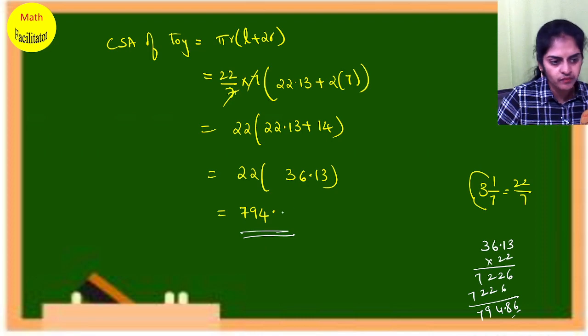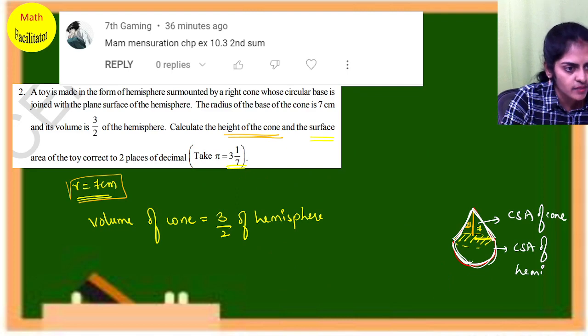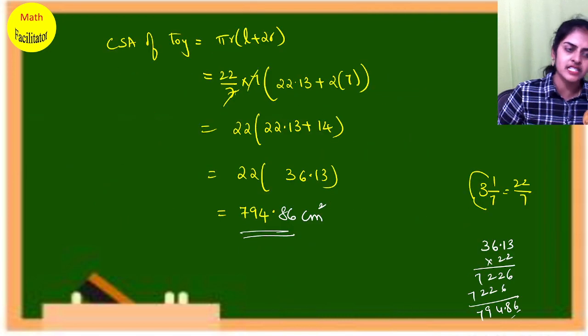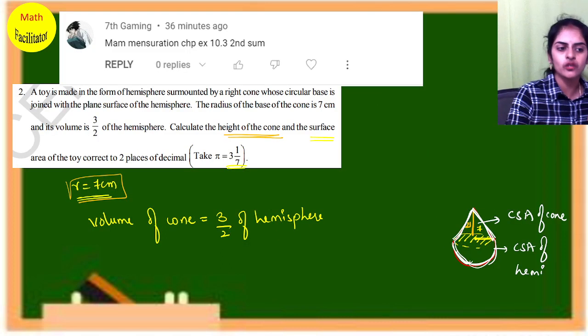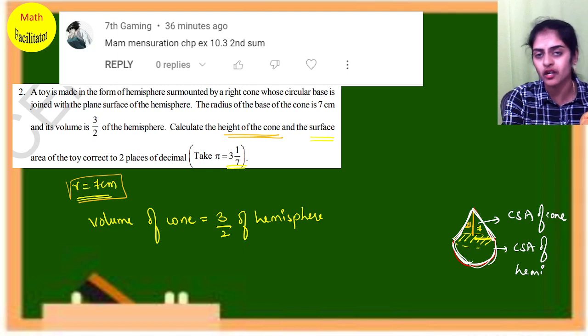So 794.86 centimeter square approximately is the correct answer. Surface area is in centimeter square since everything is given in centimeters. Radius is 7 centimeter, so you can write centimeter square here.